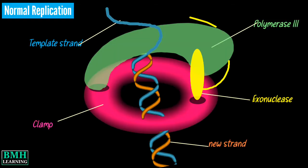During normal replication, both binding pockets of the clamp are occupied — one by polymerase 3 directly, and one by the exonuclease, forming a second indirect interaction between polymerase 3 and the clamp.